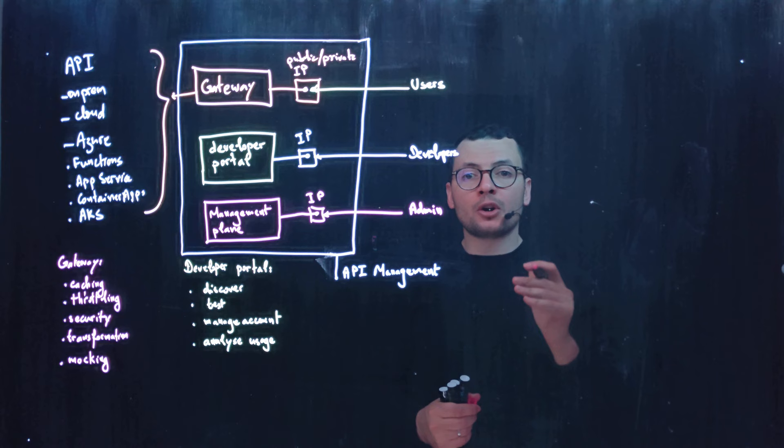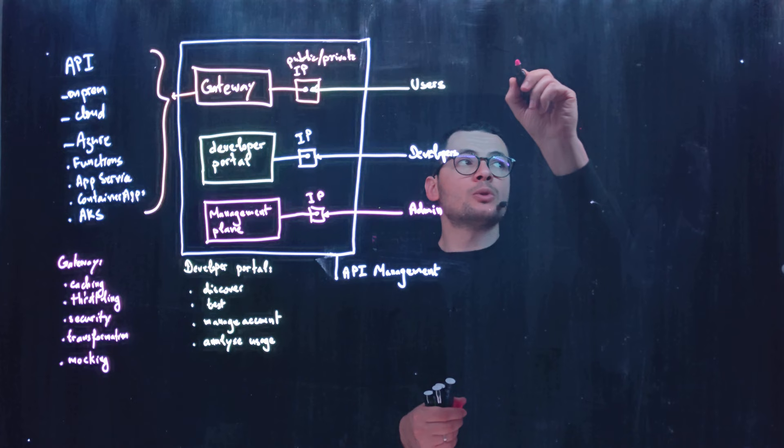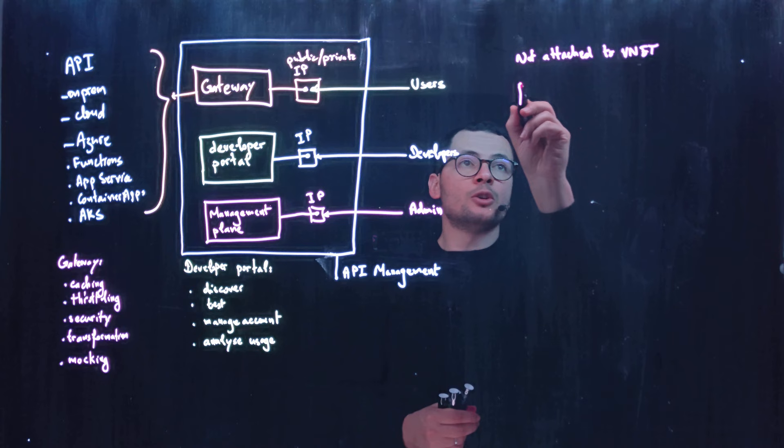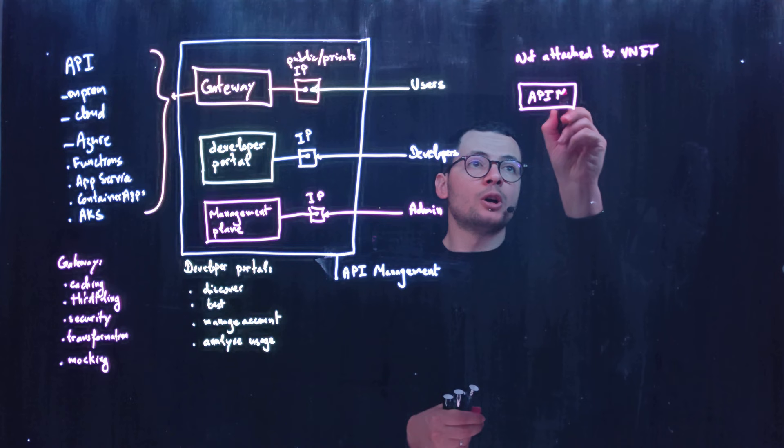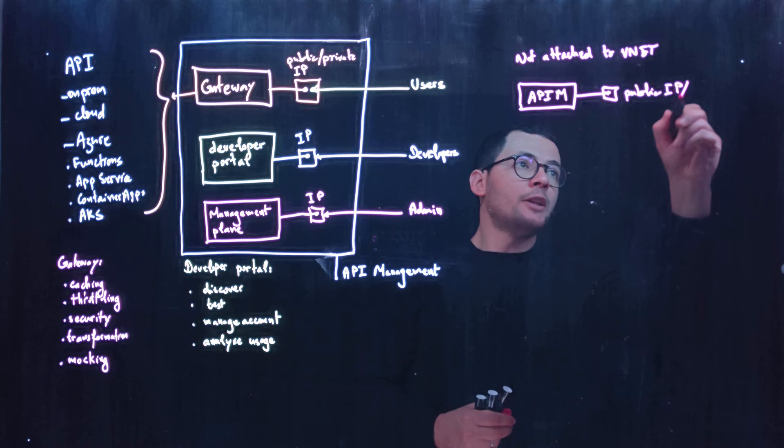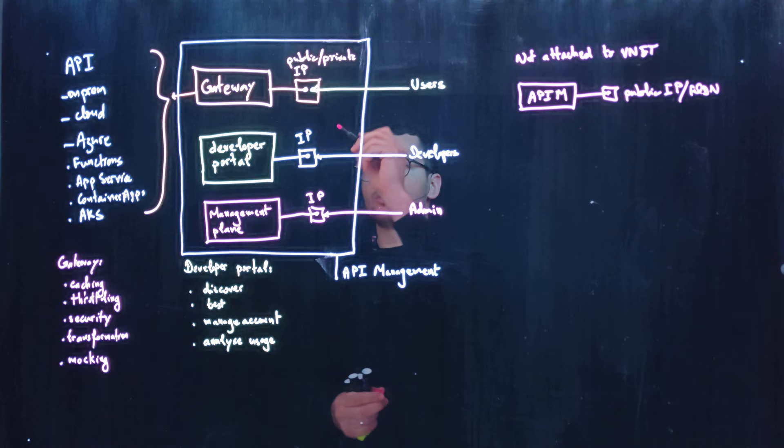The first option is to not attach the API management to a virtual network. With that option, your API management will be exposed publicly to the internet through a public IP address. It will also have a public FQDN that can be used by your end users to access the gateway directly.